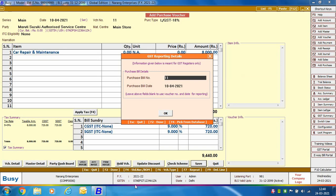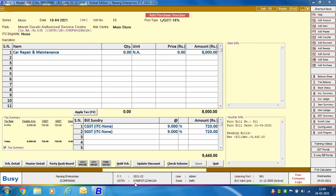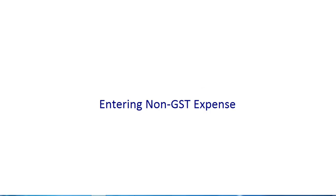On saving the voucher, a GST Reporting Details window appears where you can specify the original purchase bill number and date. Next, we discuss entering Non-GST expenses — those that do not fall under the GST purview but are still required to be shown in GST reports.